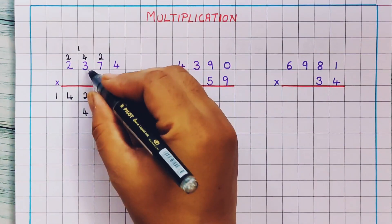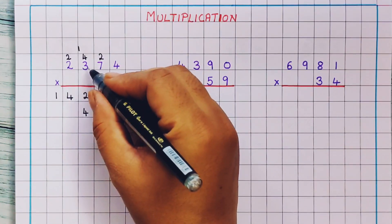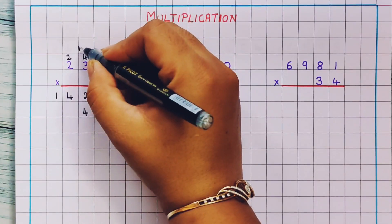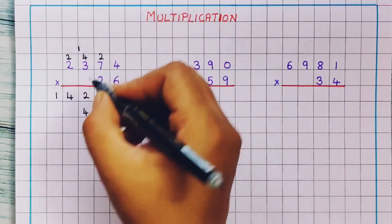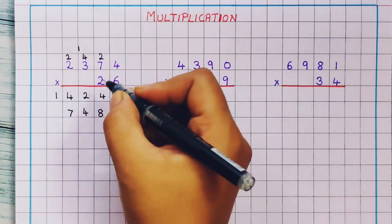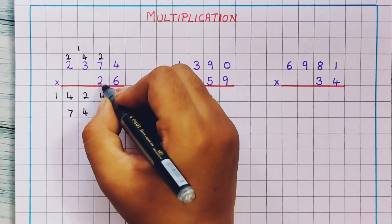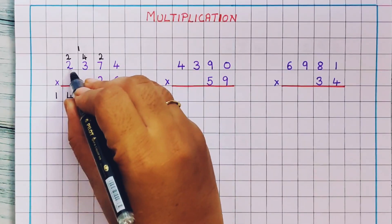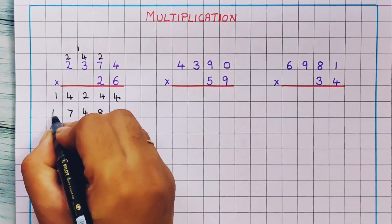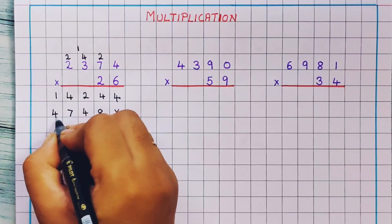2 3's are 6. 6 plus here 1 I have got, so 6 plus 1 is 7. I will write here 7. Now 2 2's are 4. So here I will write 4.